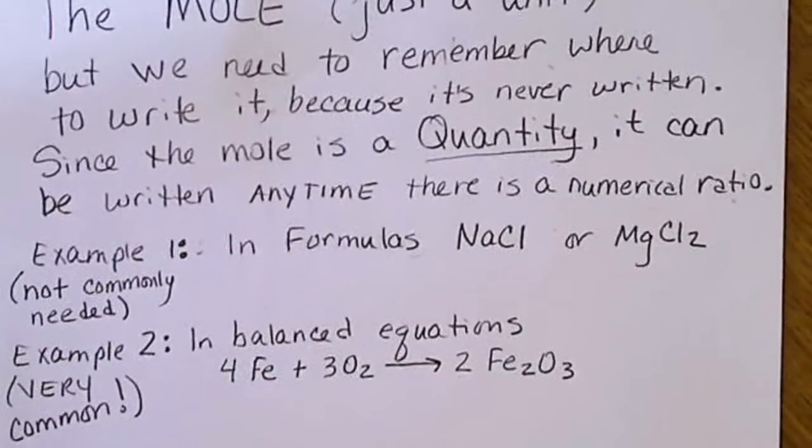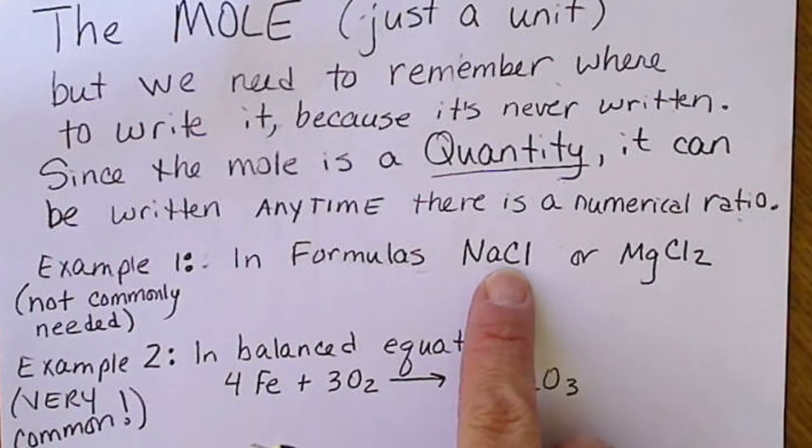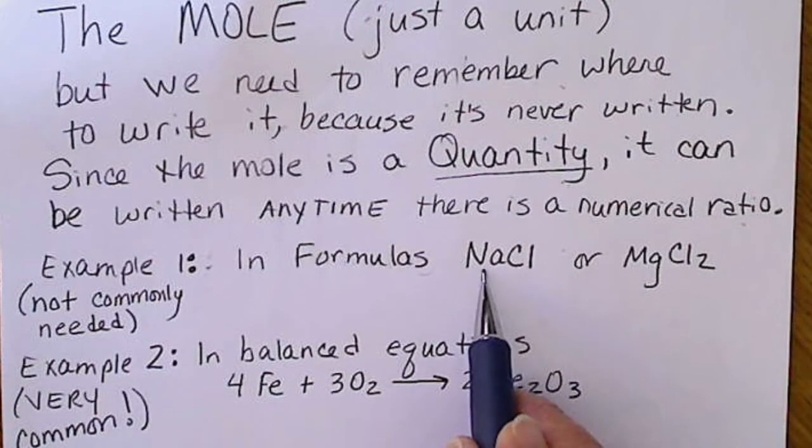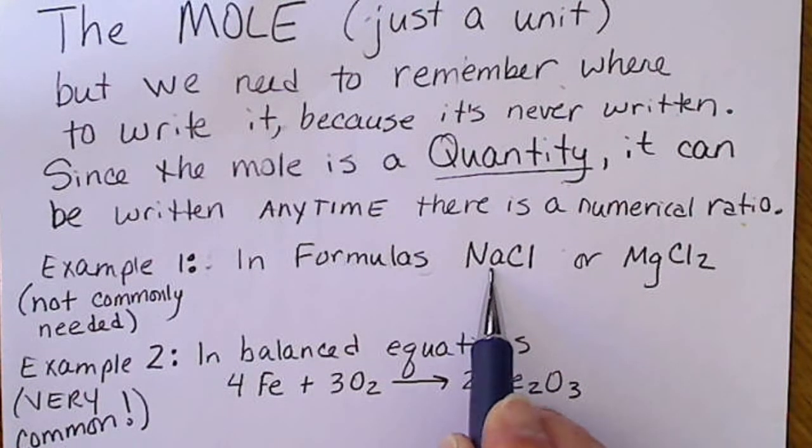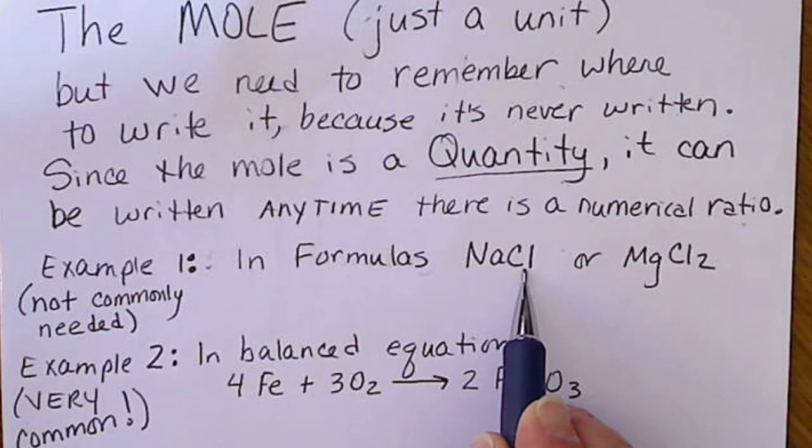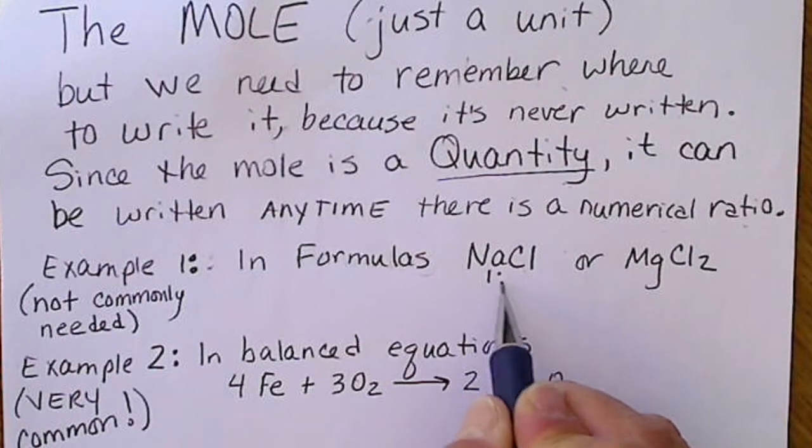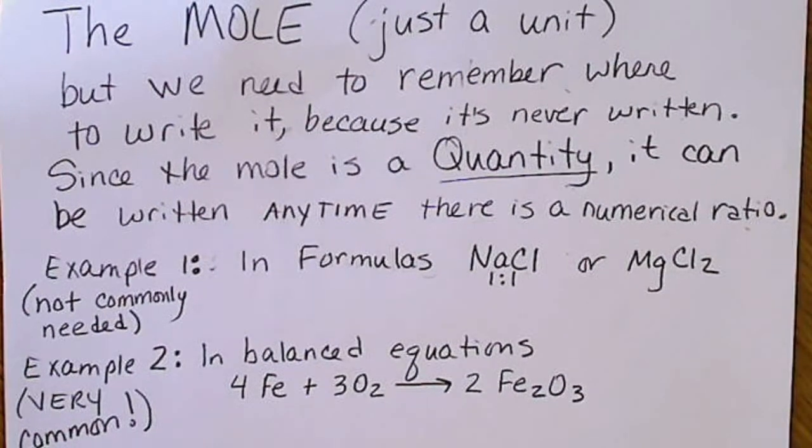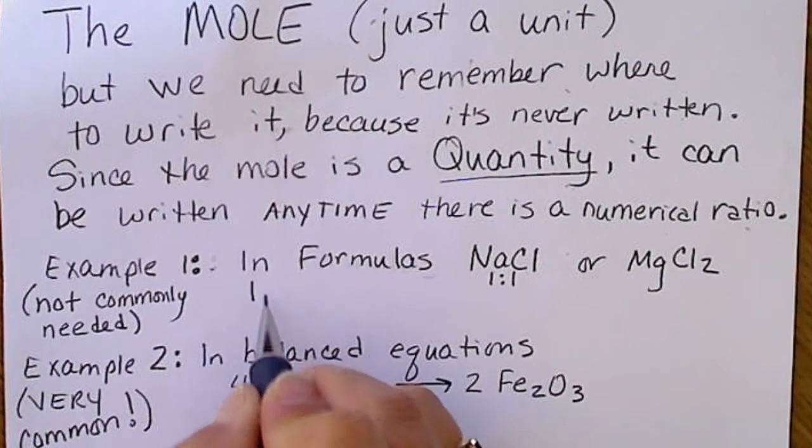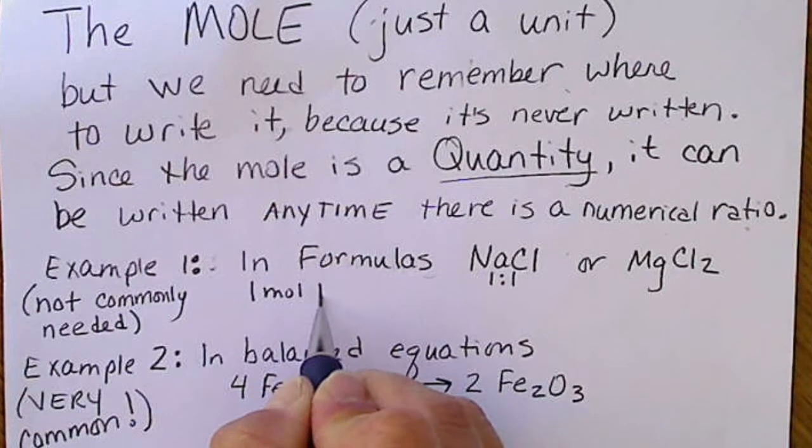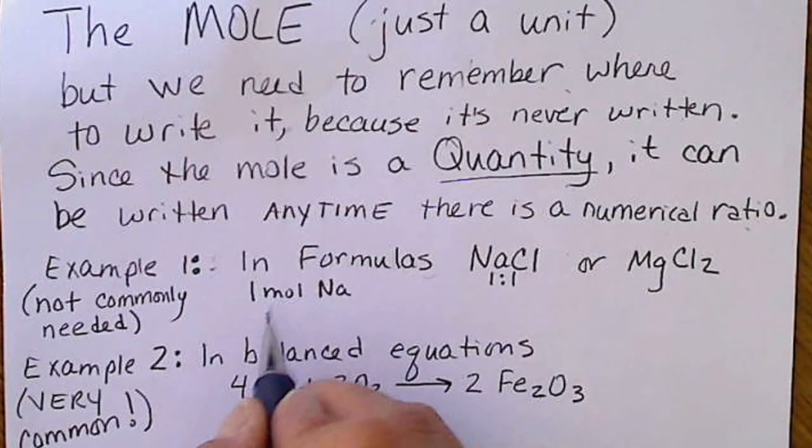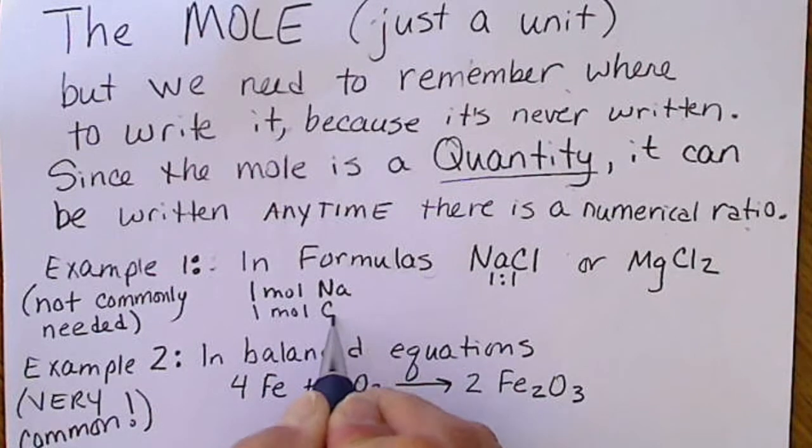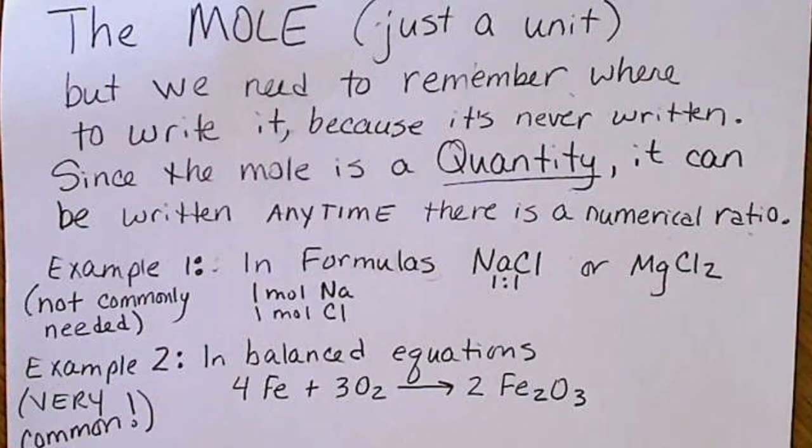For example, any time we have an ionic compound, or any compound for that matter, the formula is a ratio. This is one atom of sodium to one atom of chlorine. So when we did the naming in Chapter 5, we wrote that as just a one-to-one ratio. We could say there's one mole of sodium for every one mole of chlorine atoms.